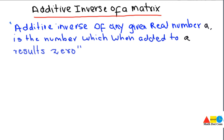We will start from the definition of additive inverse. Forget about the matrix for the time being and concentrate on the definition of additive inverse so you can easily understand what it actually is. The additive inverse of any given real number is the number which, when added to that real number 'a', results in zero.